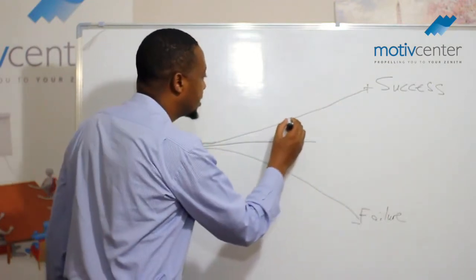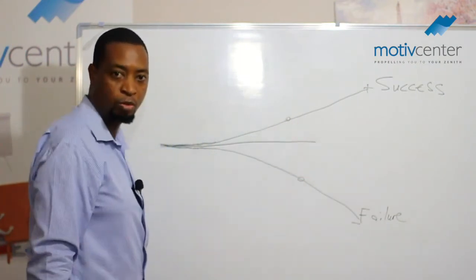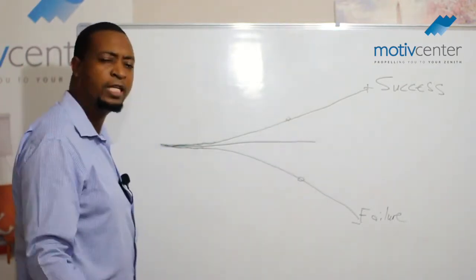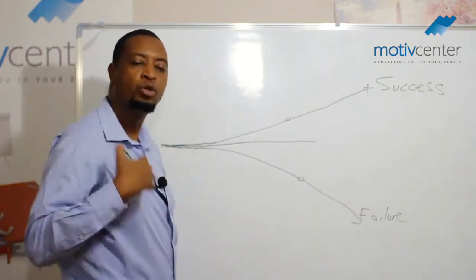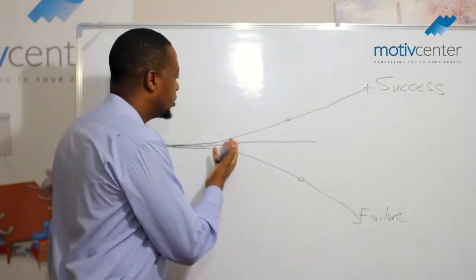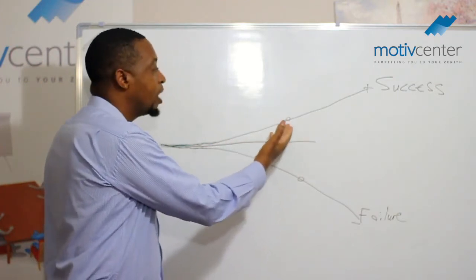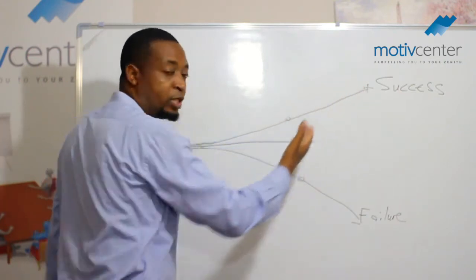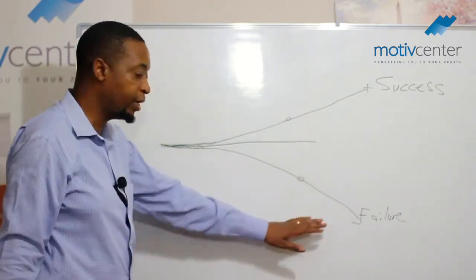This one tends to believe that this one succeeded because they were lucky. Maybe at some point, maybe let's just say at this point, this one got a scholarship. This one failed and didn't go further with his studies. So this one will say, this guy was just lucky. He did not, before that scholarship which he got, he wouldn't be where he is. But we fail to realize that the small little disciplines that this person was engaging in are the ones that made him a candidate for the scholarship which eventually catapulted him to success. And this one, because of those small little disciplines, became an ultimate failure.